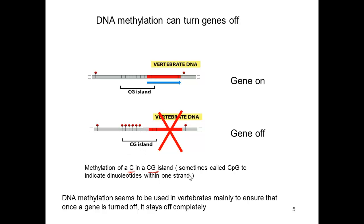Sometimes you say CpG island, which is inferring a 5 prime to 3 prime direction — so when C precedes G. You have some CpG clusters in promoter regions, and when these get methylated, different types of gene regulation will occur.